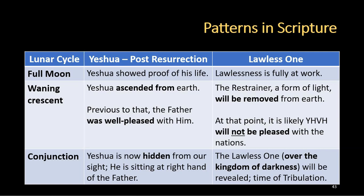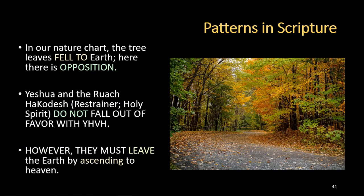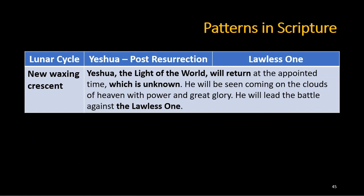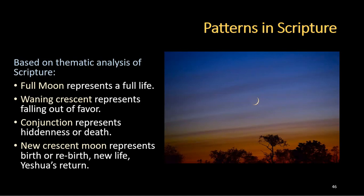The lawless one, who is over the kingdom of darkness, will be revealed. And then we'll have the time of tribulation. In our nature chart the tree leaves fell to the earth, and here there's opposition — Yeshua and the Ruach HaKodesh, the restrainer or Holy Spirit, do not fall out of favor with Yehovah; however, they must leave the earth by ascending to heaven. Now let's see how this finishes out at the level of the new waxing crescent. Yeshua, the light of the world, will return at the appointed time — which is unknown — seen coming on the clouds of heaven with power and great glory, and he will lead the battle against the lawless one. Based on thematic analysis of scripture: full moon represents a full life, waning crescent represents falling out of favor, conjunction represents hiddenness or death, and new crescent moon represents birth or rebirth, new life, and Yeshua's return.